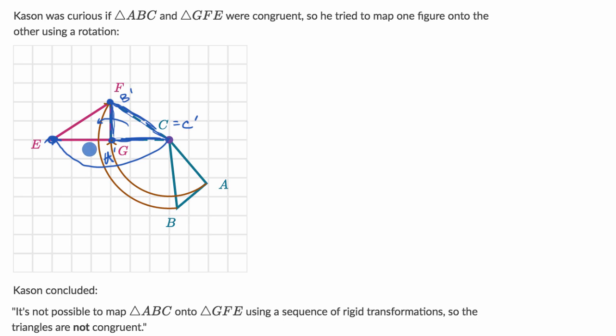And then if you did that, you would see that there is a series of rigid transformations that maps triangle ABC onto triangle GFE. So Kassan is not correct. He missed one more transformation he could have done, which is a reflection.